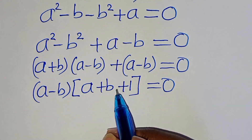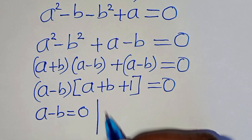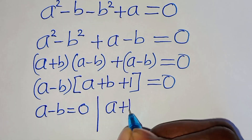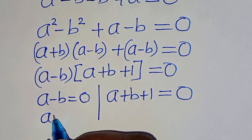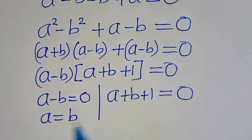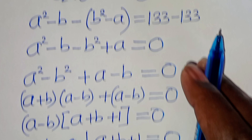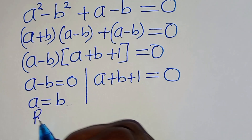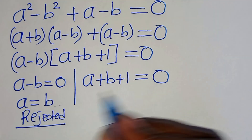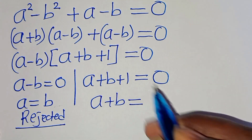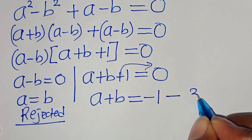So we have two parts: the first part is a minus b equals 0, and the second part is a plus b plus 1 equals 0. From the first part, a equals b, and this violates the condition that a is not equal to b — so this part is rejected. From the second part, a plus b equals minus 1. Let's call this equation 3.